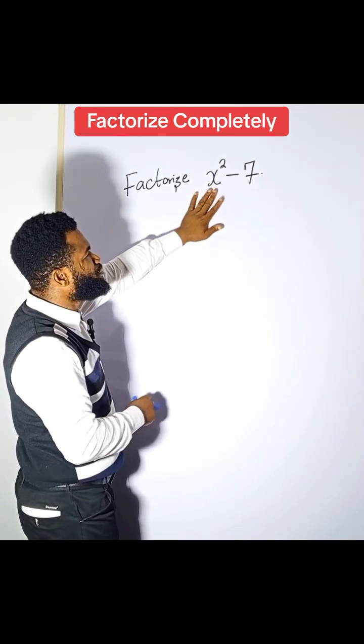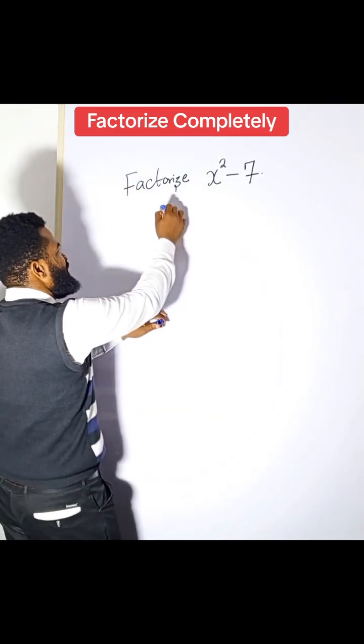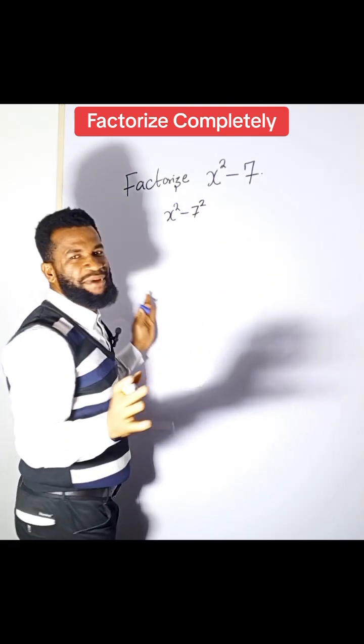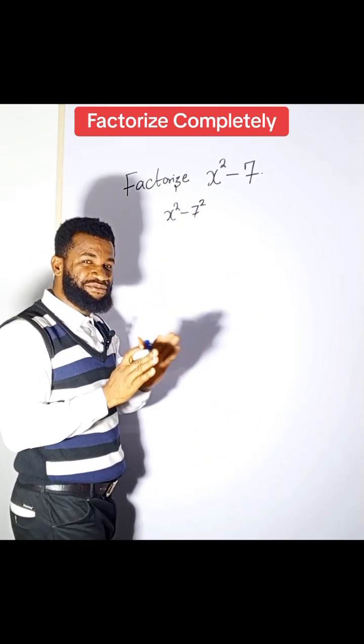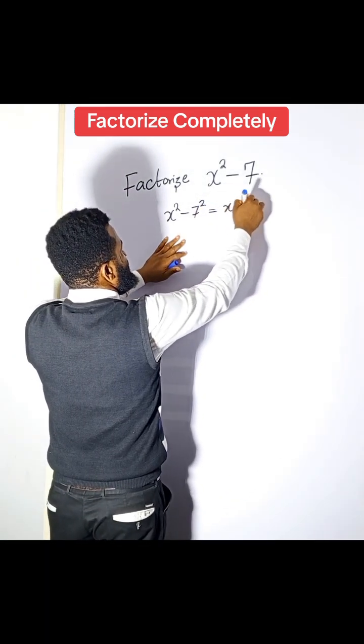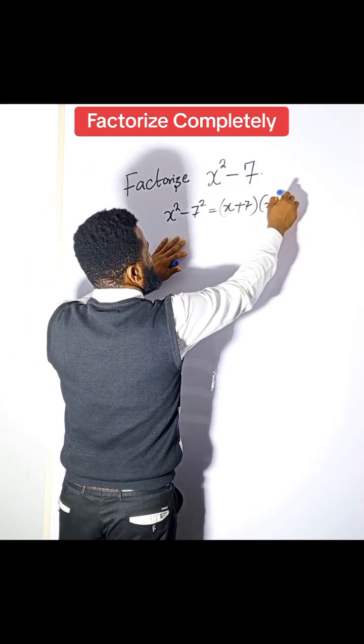Normally, if this were x² minus 7², this would be difference of two squares. It could have been very easy - you just have x plus 7 multiplied by x minus 7.